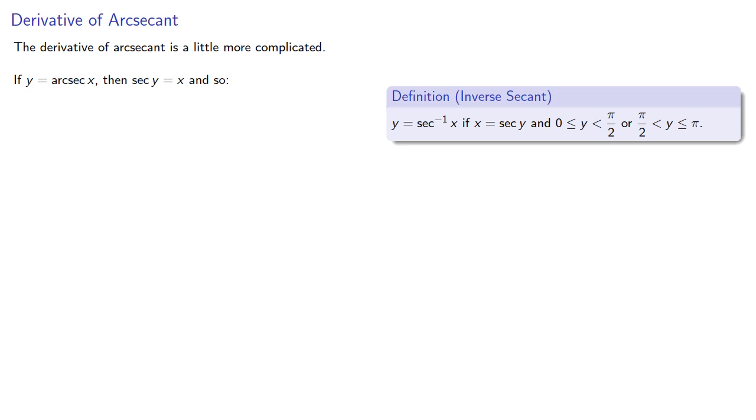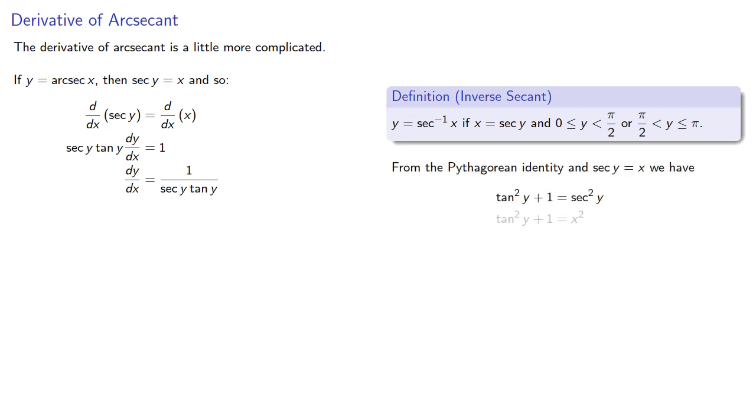The derivative of arcsecant is a little more complicated. Here we'll have to pay close attention to the definition. We start the same way. If y equals arcsecant x, then secant y equals x. We'll use implicit differentiation. From the Pythagorean identity, and secant y equals x, we have...